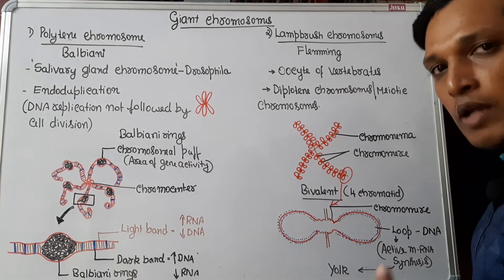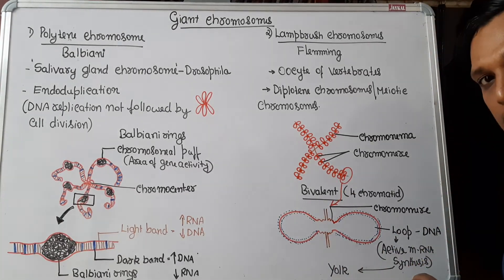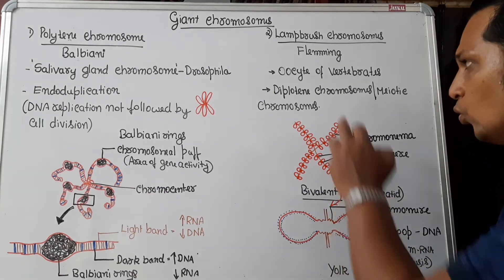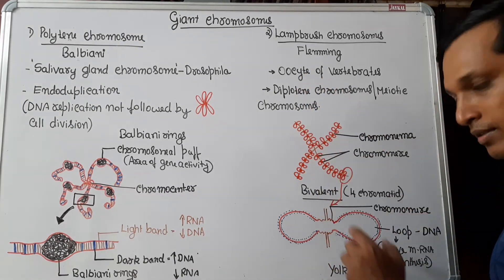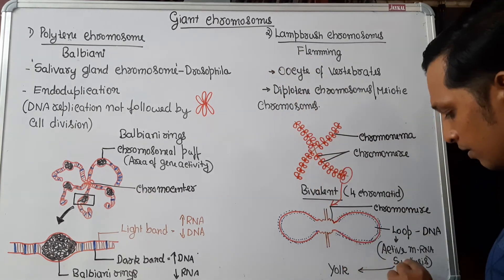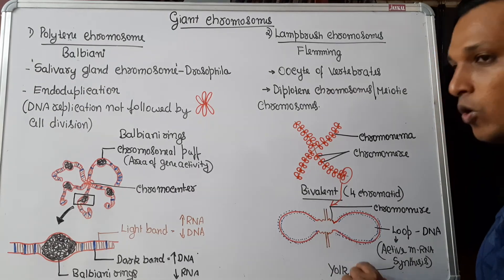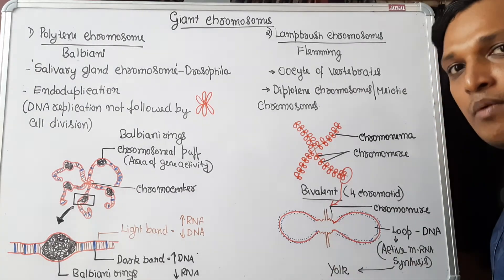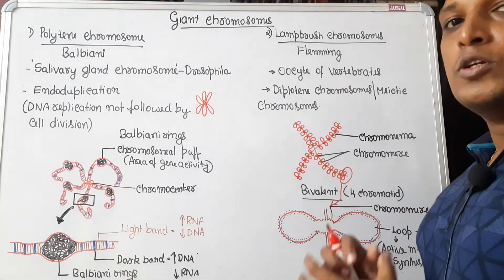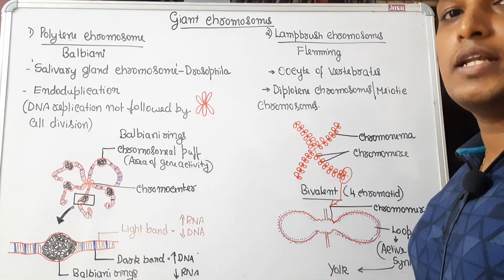What happens with this mRNA? The mRNA undergoes translation to form protein in the oocyte. Since lampbrush chromosome is present in the oocyte, it helps in the synthesis of protein, which is nothing but yolk. Hence, a high amount of yolk is produced by this giant chromosome. This covers the two giant chromosomes — an important topic for NEET.